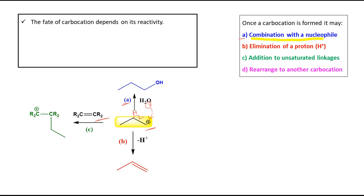The third possibility, shown in green, is addition to an unsaturated linkage. The general structure R₂C=CR₂ represents an alkene with some unsaturation. The pi electron density of this double bond can attack the positive charge of the carbocation. This results in the generation of a new positive charge at the attacked carbon, producing a newly generated carbocation. Unlike processes A and B, here we are not getting a neutral species — we are getting a new carbocation.